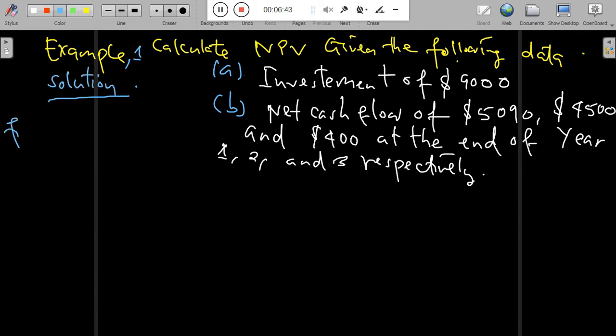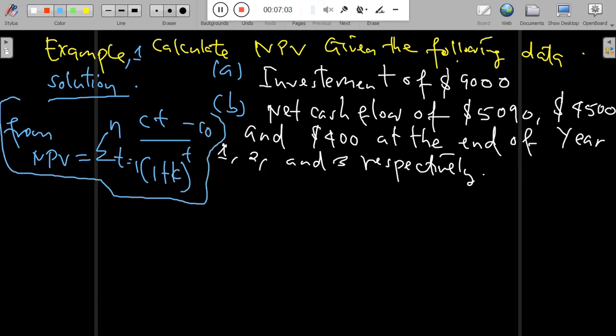Solution: The formula for net present value is given by taking the summation of net cash flow generated by the project at time t and dividing by 1 plus the required rate of return raised to the power of t, where t represents the lifetime of the project. When we calculate the net present value for the first year, that is $5,090 divided by 1 plus the required rate of return, which is 10%.